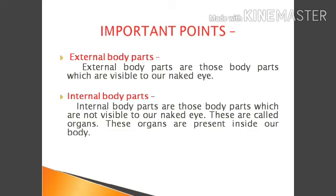Some important points. External Body Parts are those body parts which are visible to our naked eyes. Internal Body Parts are those body parts which are not visible to our naked eyes. These are called organs, and these organs are present inside our body.